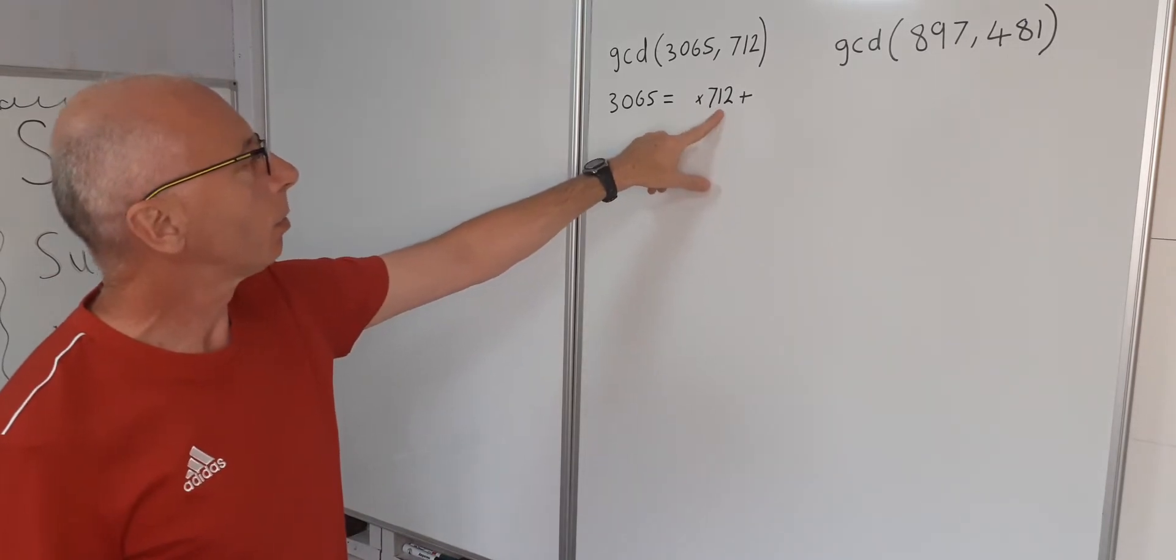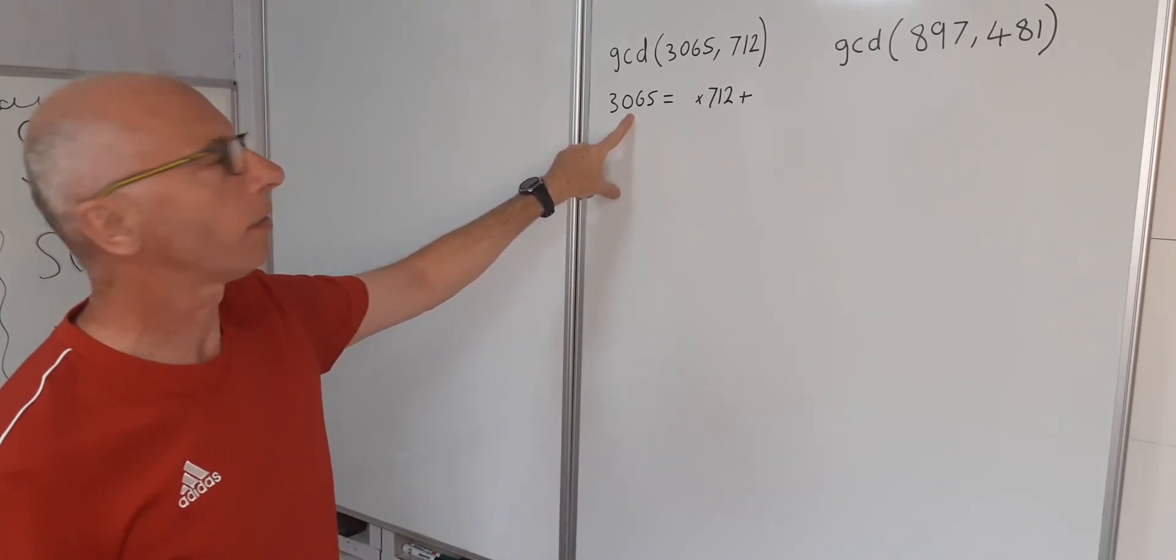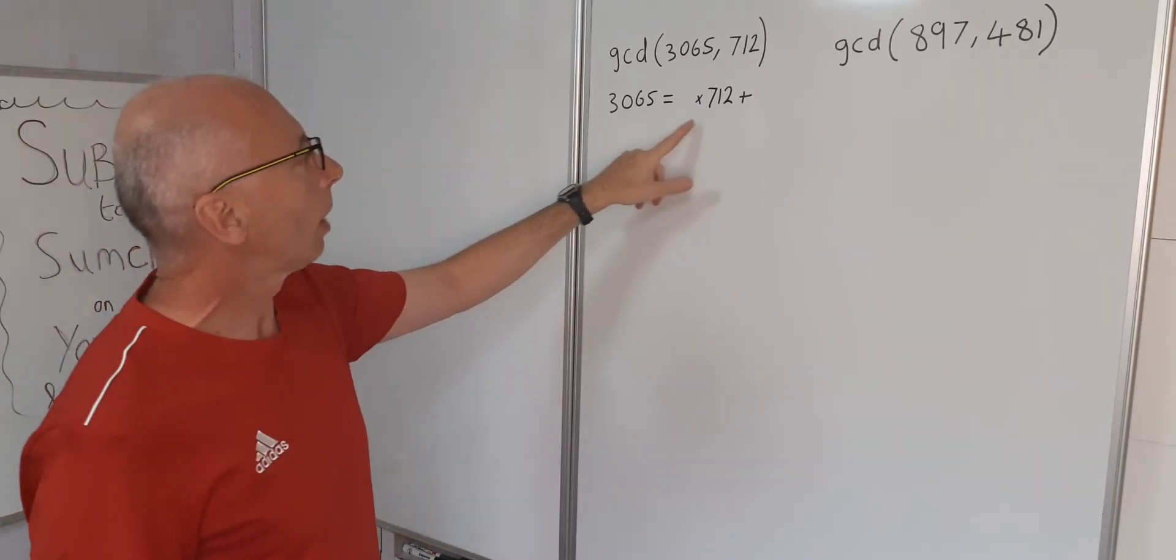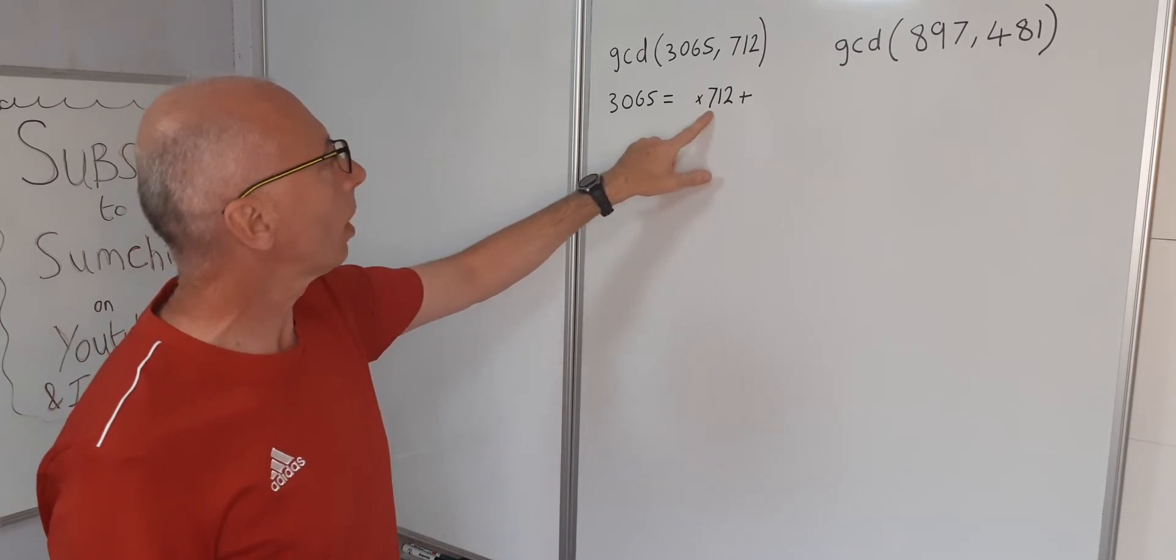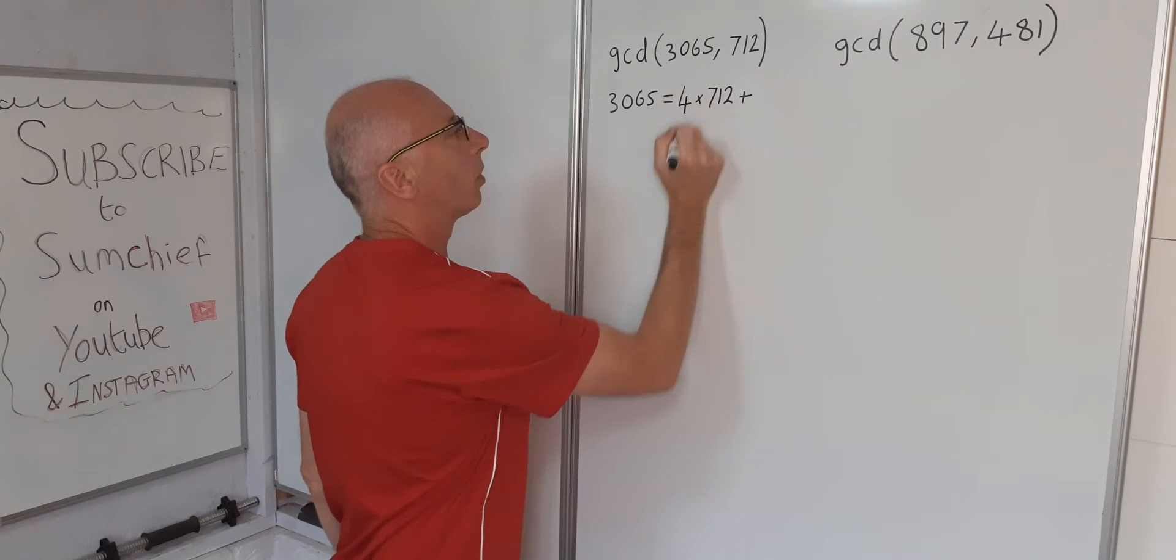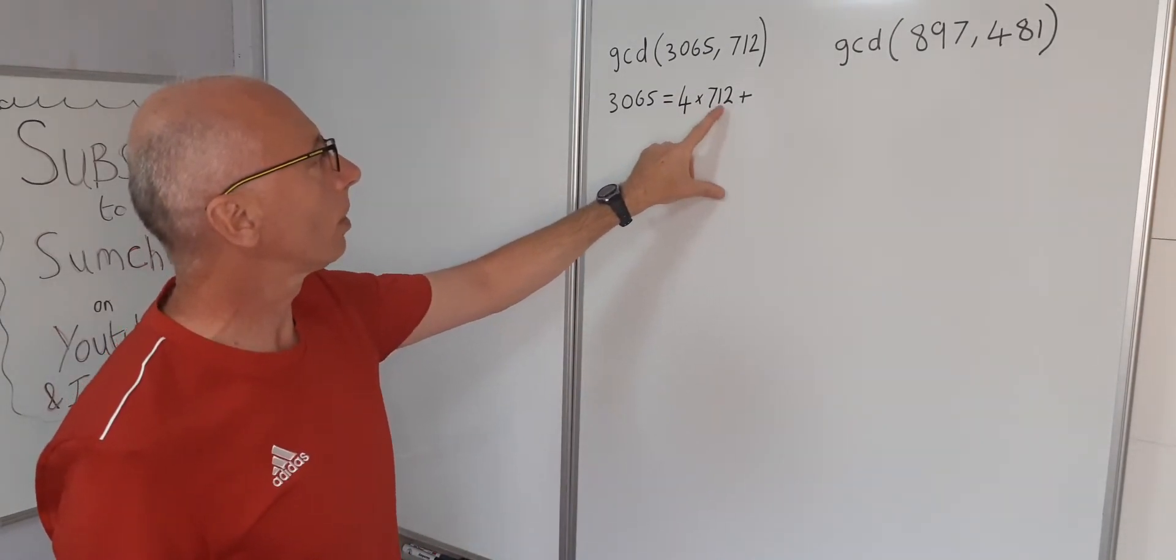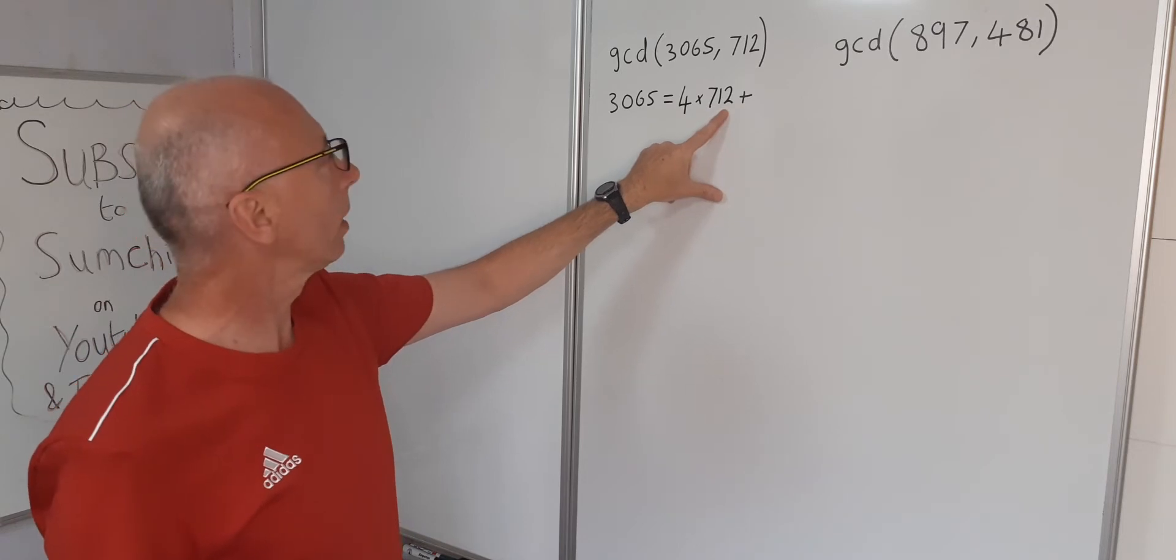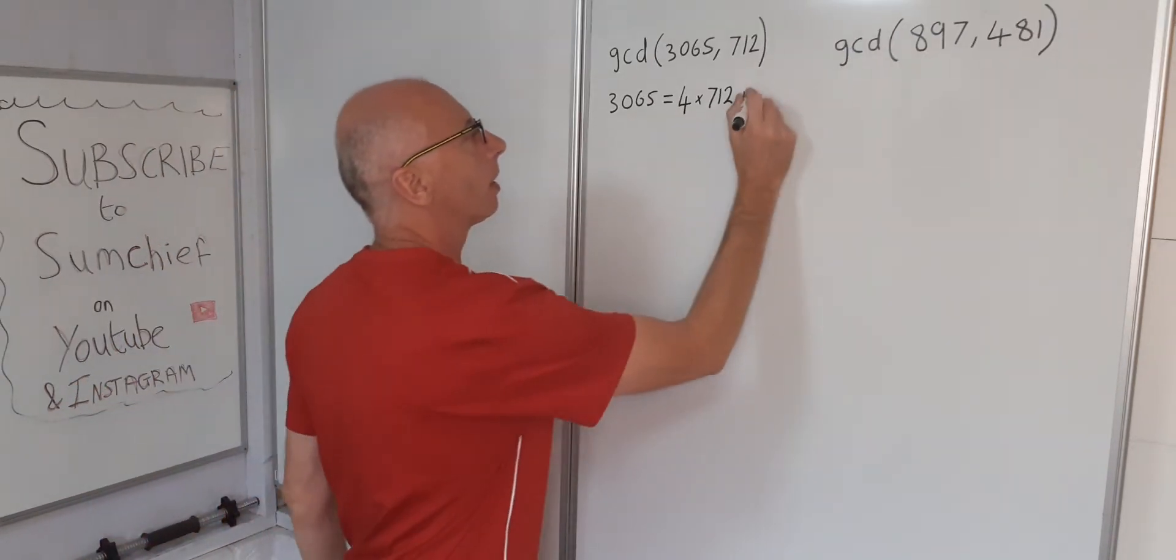So what number do we multiply 712 by to get just below 3065 or even equal to if we can? We can see 7 fours is 28, so if we multiply by 4, four times 712 is 2848, which will give us 217 left over.